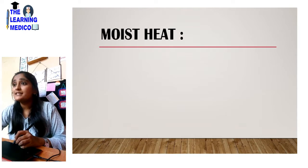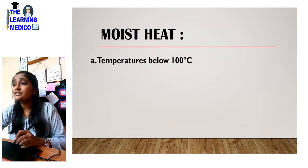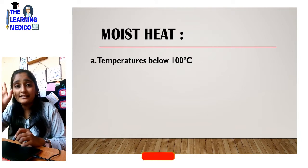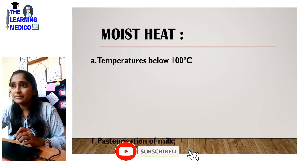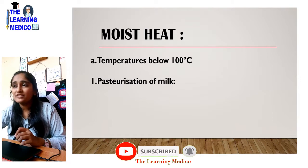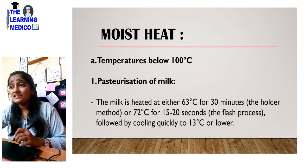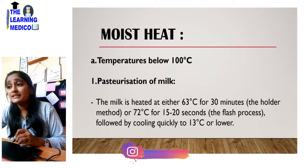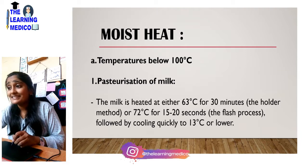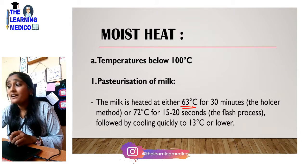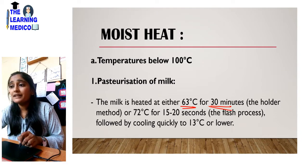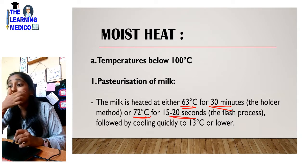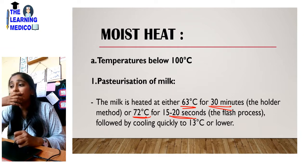Next is moist heat sterilization. First, at temperatures below 100 degrees Celsius. The first example is pasteurization of milk. The milk is heated either at 63 degrees Celsius for 30 minutes, or at 72 degrees Celsius for 15 to 20 minutes. As the temperature is increased, the time is decreased. Then it is quickly cooled down to 13 degrees Celsius.